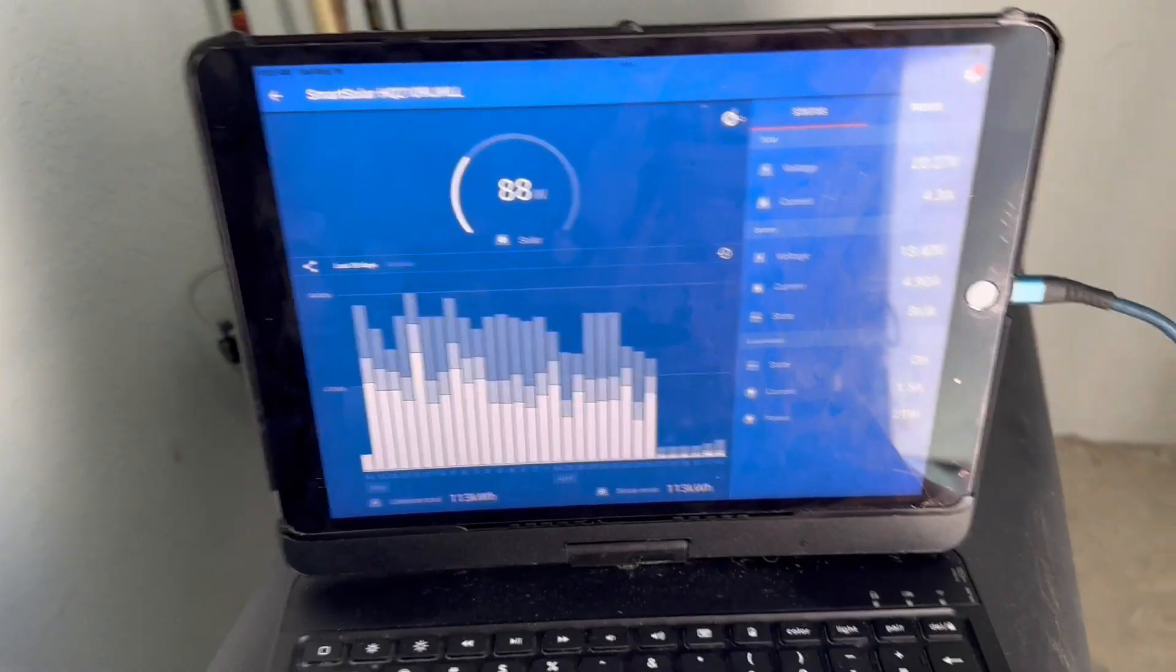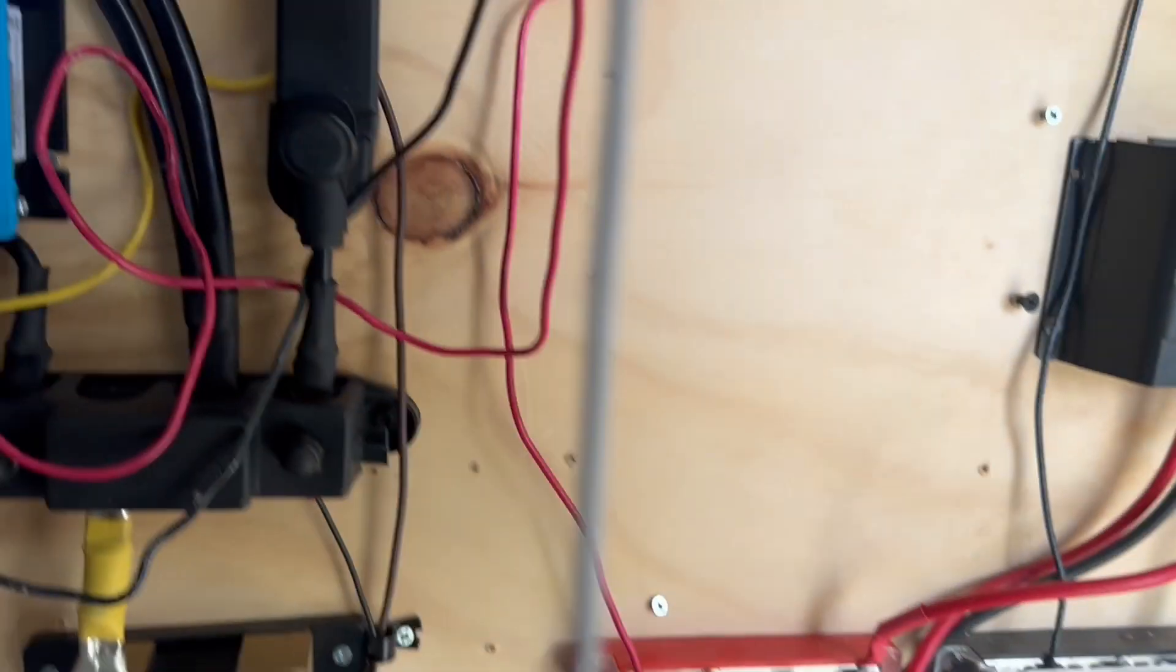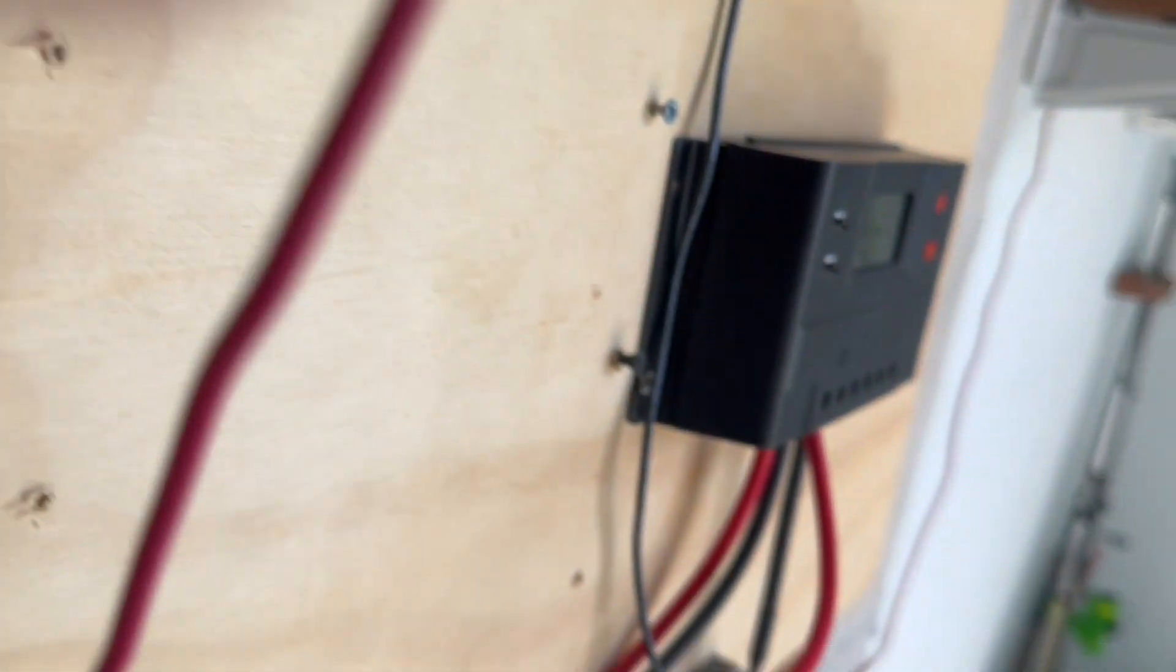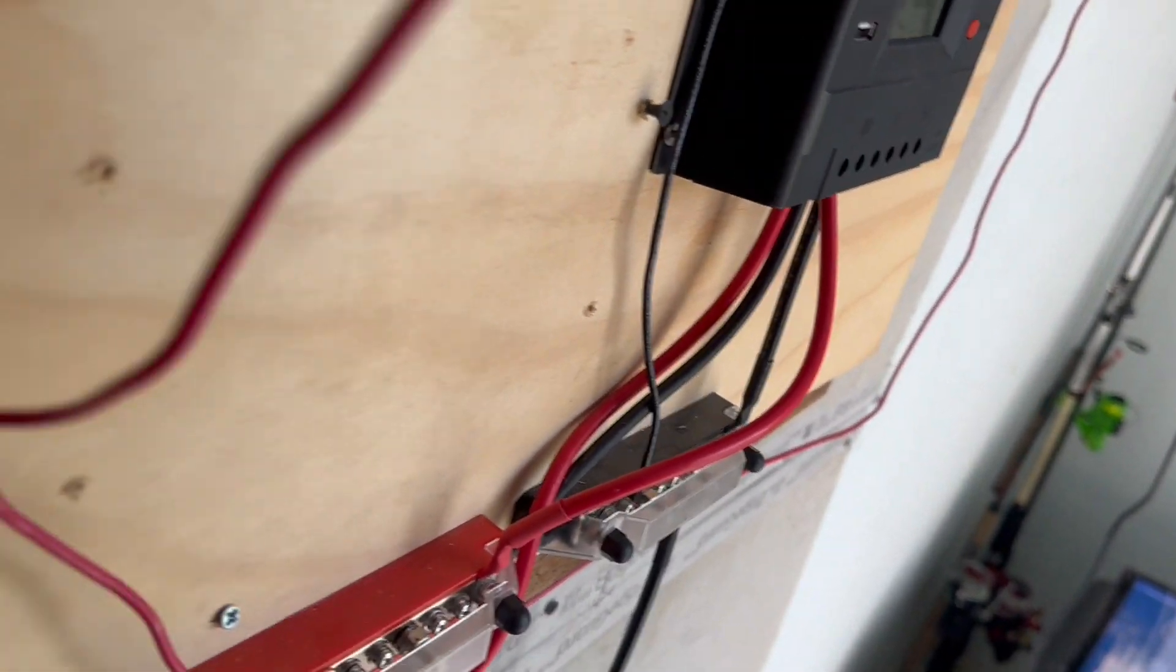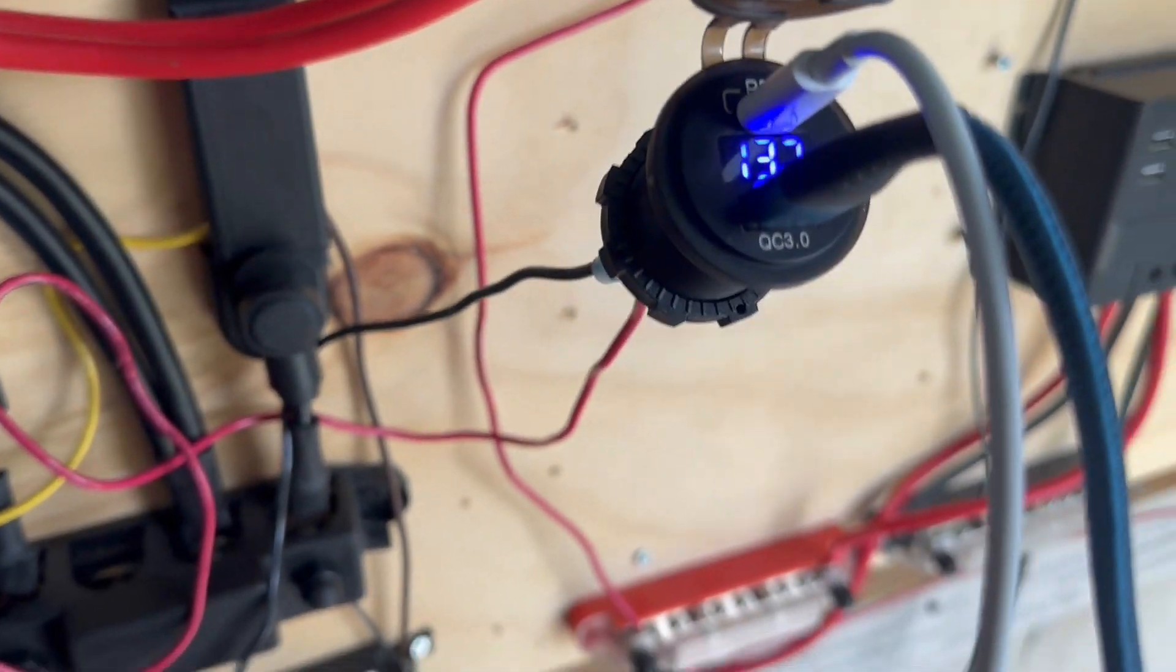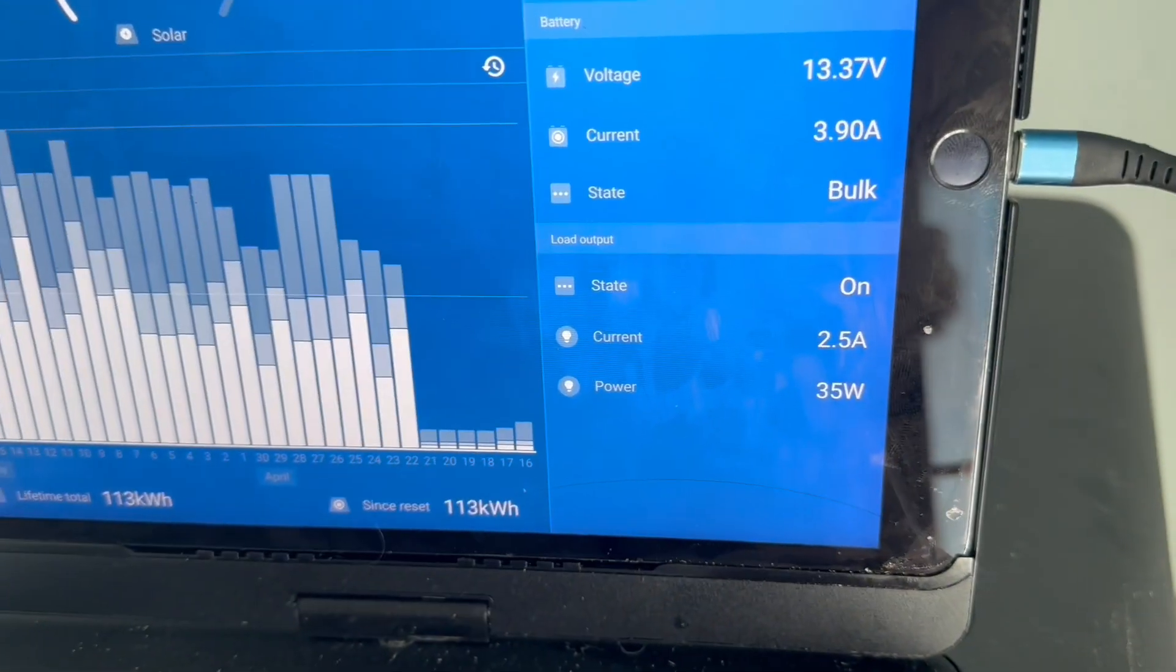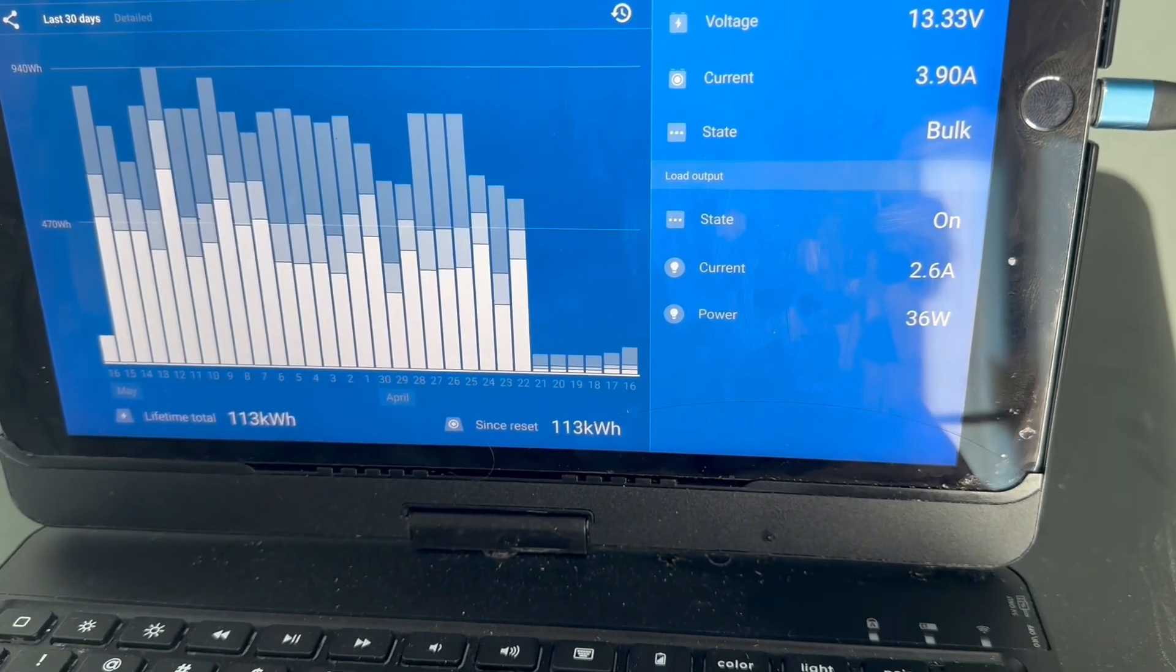So right now we're still at 1.5, and now let's plug in the iPad too. There we go, we heard the little tone. So we've got the iPad and the iPhone both charging, and we're drawing 2.6 amps for both devices.